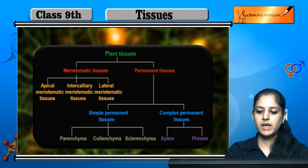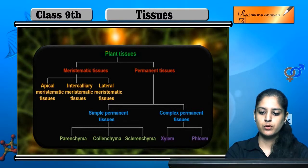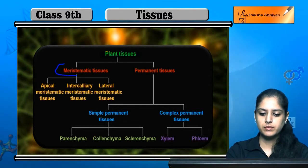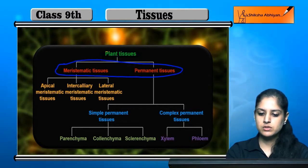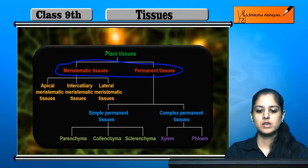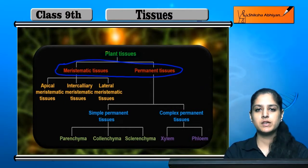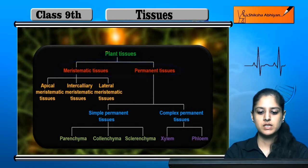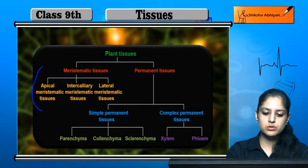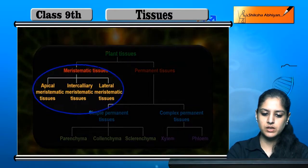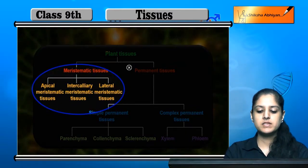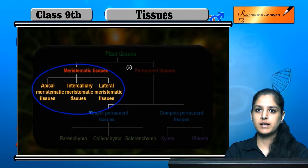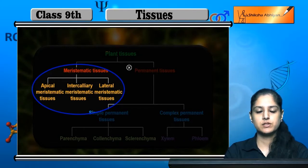The main plant tissues are two types: meristematic tissues and permanent tissues. These two tissues are the main, broad classifications of plant tissues. Meristematic tissues are divided into three types: apical meristematic tissues, intercalary meristematic tissues, and lateral meristematic tissues.